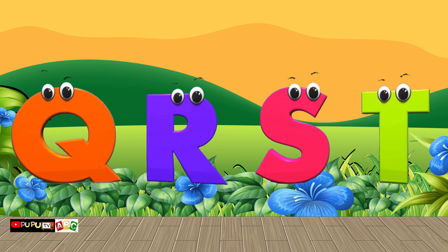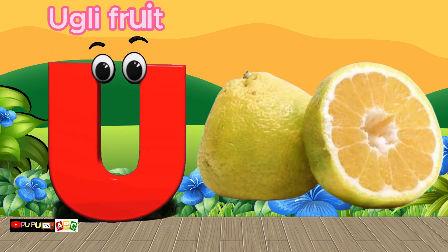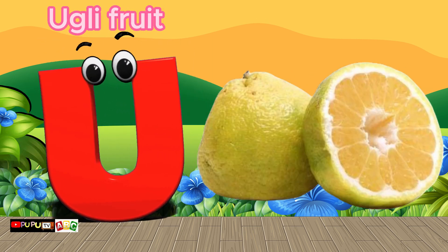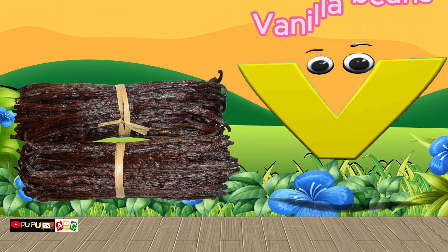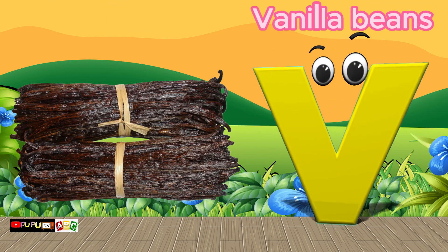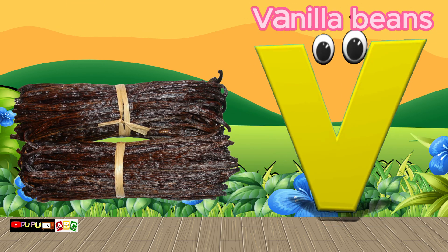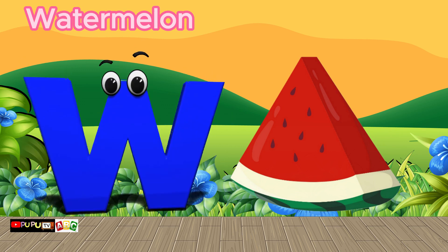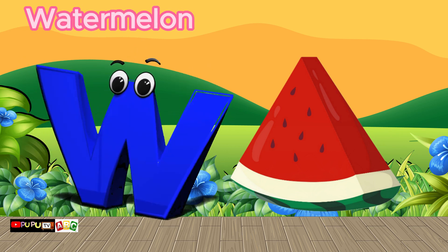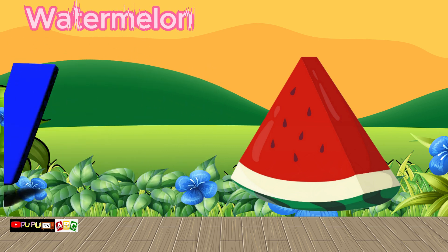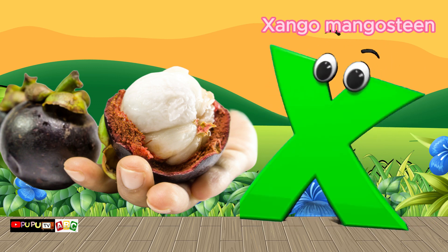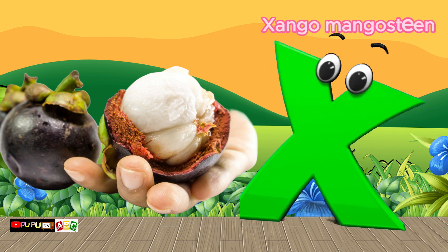U is for Ugly Fruit, u-u-ugly fruit. V is for Vanilla Beans, v-v-vanilla beans. W is for Watermelon, w-w-watermelon. X is for Xango Mangosteen, x-x-Xango Mangosteen.